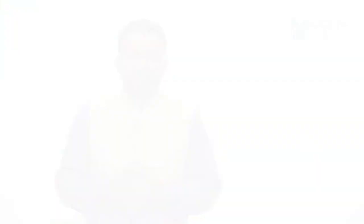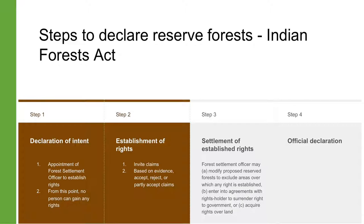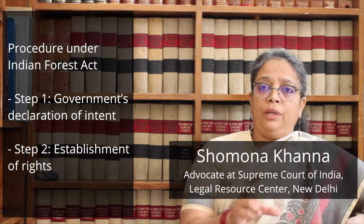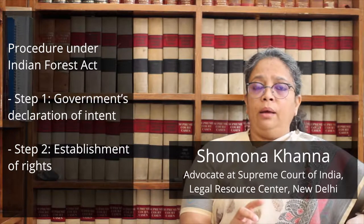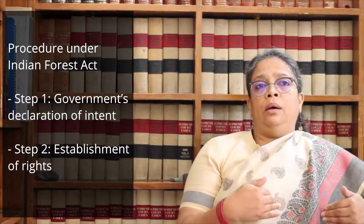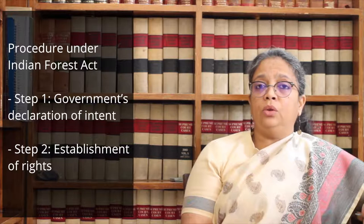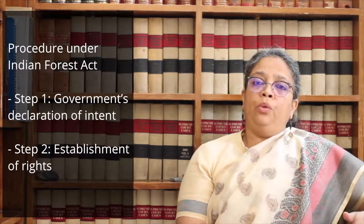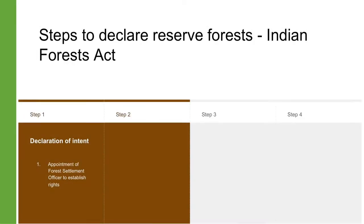The procedures under the Indian Forest Act for reserved and protected forests and under the Wildlife Protection Act for wildlife sanctuaries and national parks are not very different. Before declaring an area as a reserved forest under the Indian Forest Act, the government has to establish the rights of people on or over that area. The first thing that happens is a declaration of intention by the government that this is a particular forest area which they intend to declare as a forest, and a notification is issued. People who have rights in those lands, use those lands, or are residing on those lands are expected to file proactive claims before what is known as a forest settlement officer.